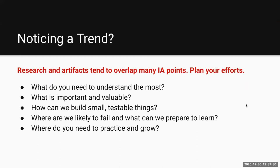You might be noticing a trend — the research and artifacts tend to overlap to help define many Information Architecture points. So plan your efforts. Understand what you need to understand the most. What's important and valuable? How can we build something small and testable to get in front of people to grow it in a natural and effective way? Where are we likely to fail, and what can we prepare to learn? What are our metrics for success in those areas? Where do you need to practice and grow to help this Information Architecture be more effective?